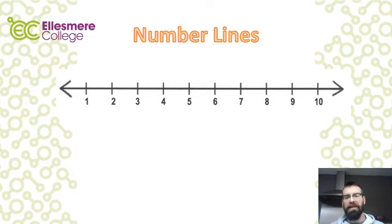Here's a number line from one to ten. We're going to use it to help solve the following problem. So, six add three. First thing we need to do is find six on the number line. There it is.